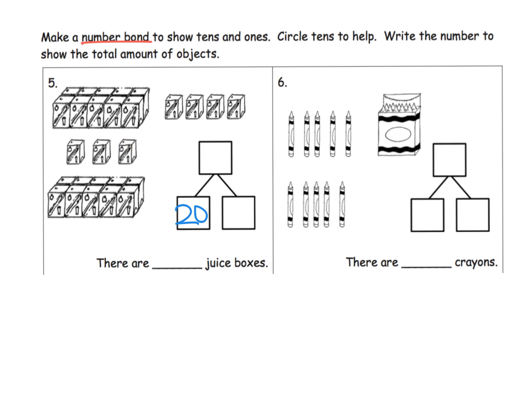That's seven ones. They did ask us to circle our 10, so there's a 10, there's a 10. So there's our 20 right here and then we had seven individual juice boxes. So how many do we have all together? We have 27 juice boxes.